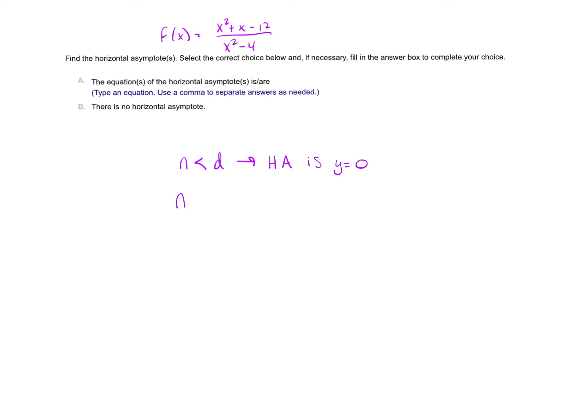If the degree of the numerator equals the degree of the denominator, your horizontal asymptote is y equals the ratio of leading coefficients. If the degree of the numerator is greater than that of the denominator, there is no horizontal asymptote.